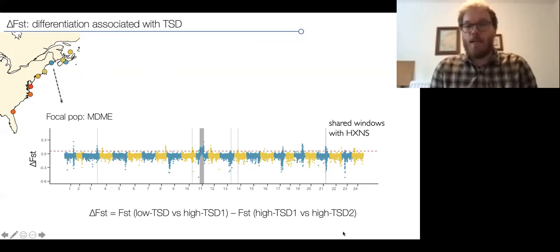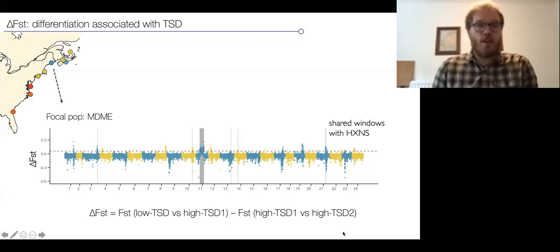The gray bars you can see in this Manhattan plot basically show the windows that are also differentiated in the population from the east coast of Nova Scotia, Halifax, which is the distinct genomic cluster but also shows low levels of TSD. This is suggesting that even though the genomic background differs, some regions are consistently differentiated between high and low TSD populations.